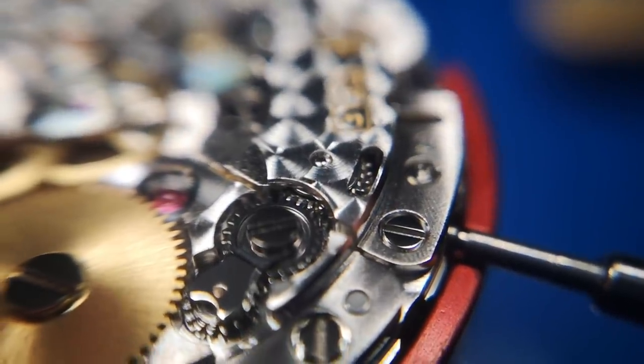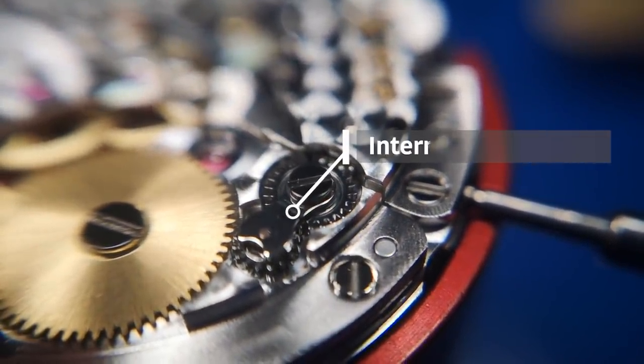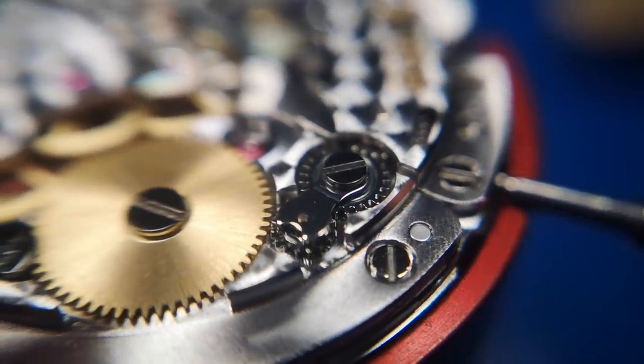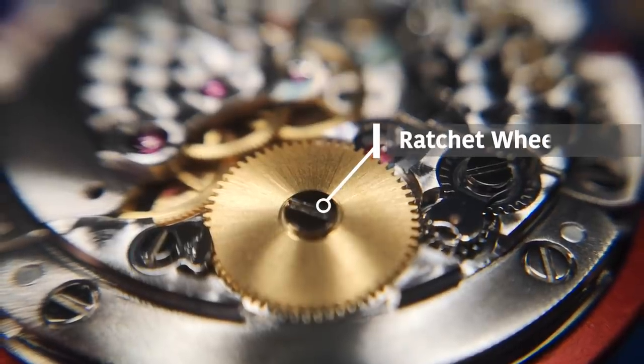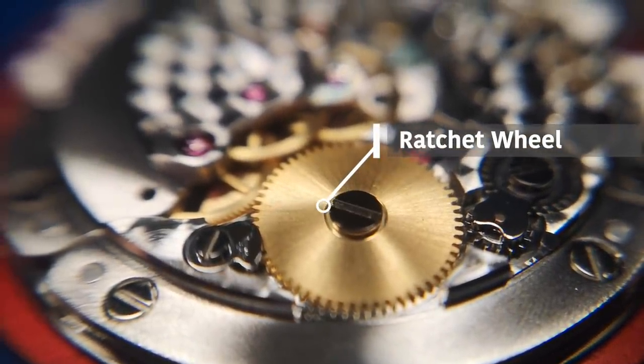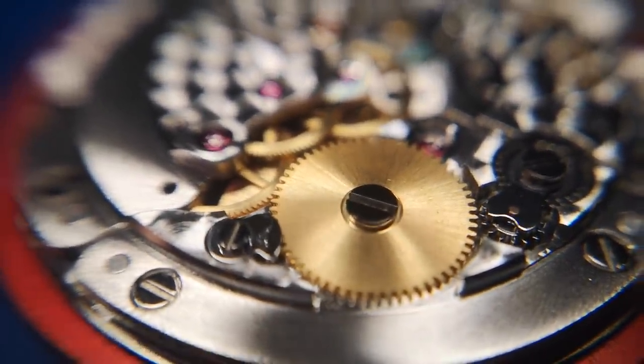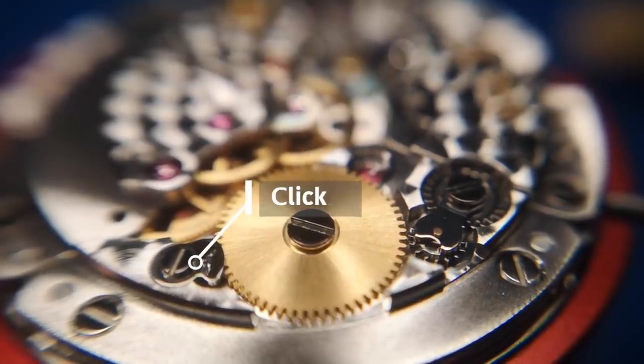The crown wheel turns the intermediate wheels that you can see there, and they turn the ratchet wheel which is stopped from going backwards by the click.